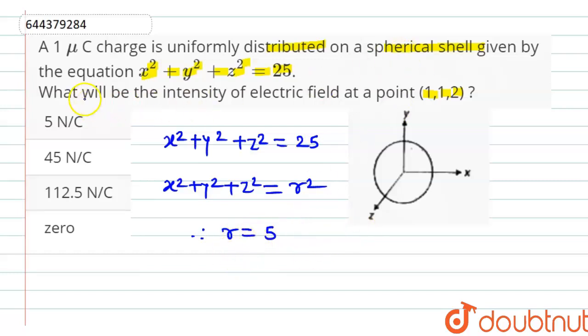Now, we have to calculate the intensity of the electric field at point (1, 1, 2). So, putting these values in our equation, we get 1² + 1² + 2² equals to